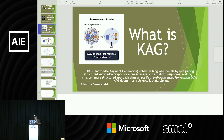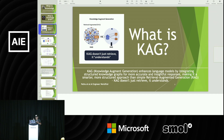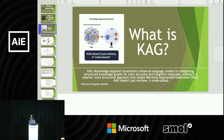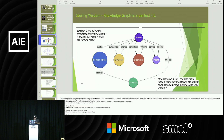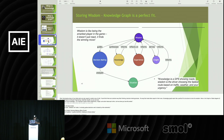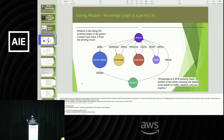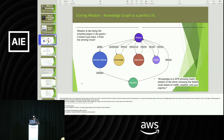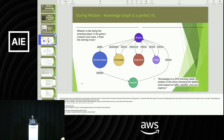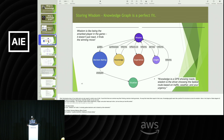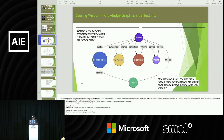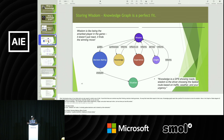KAG doesn't just retrieve — it understands. This is different. After interviewing a lot of my clients, who are experts in certain areas, I found that there are common ways of thinking and decision-making processes that make them experts in their area. Knowledge graph seems to be a perfect fit for capturing that.